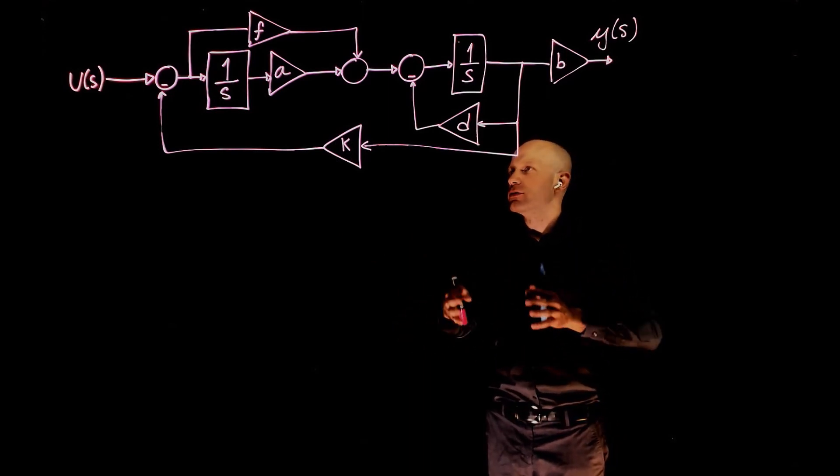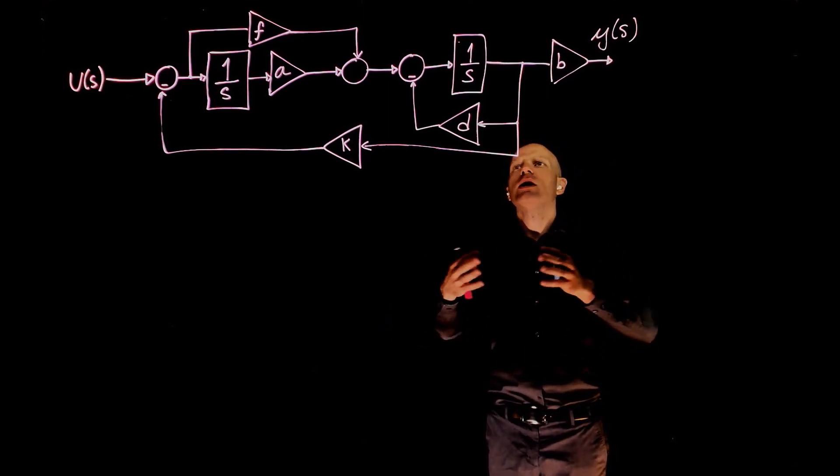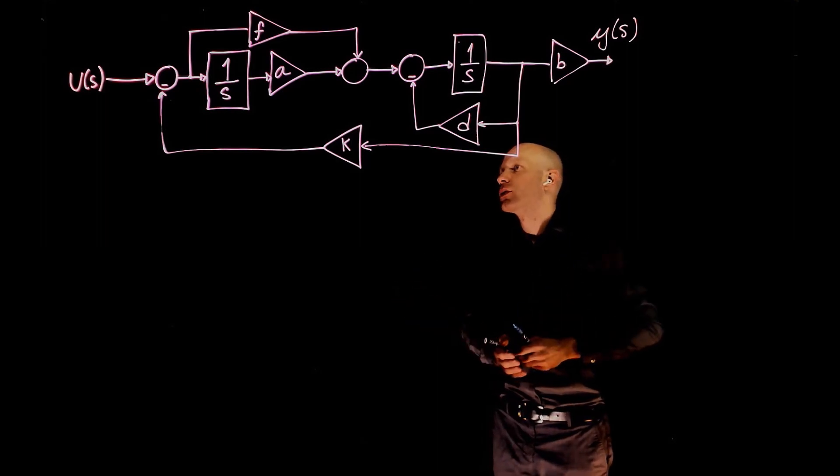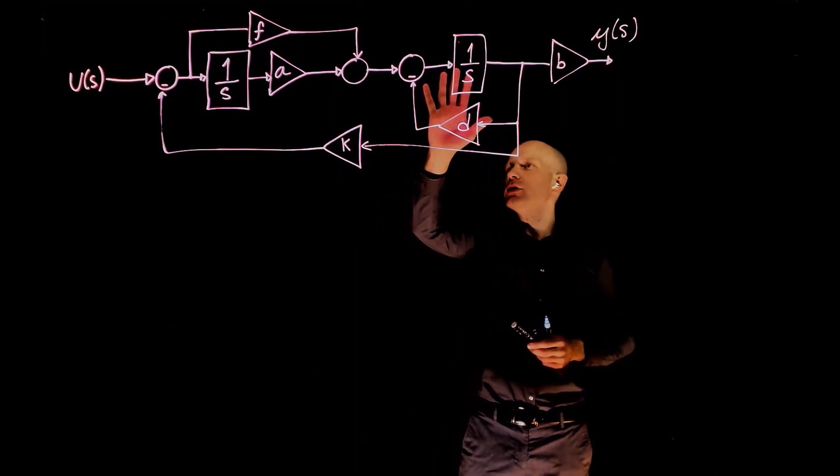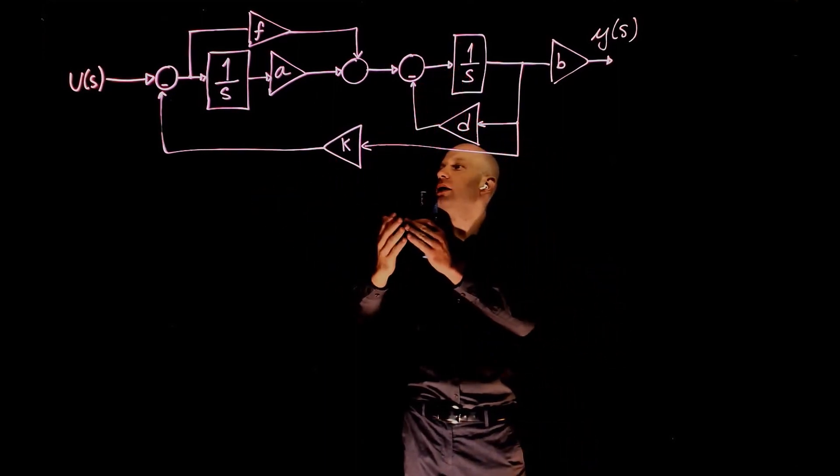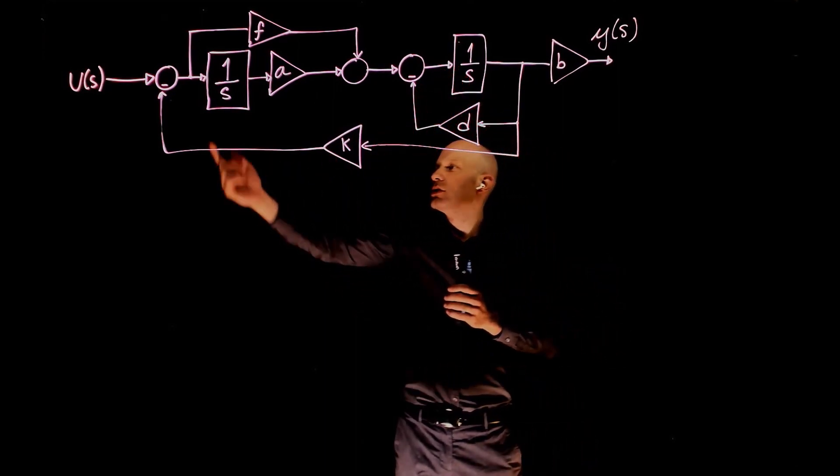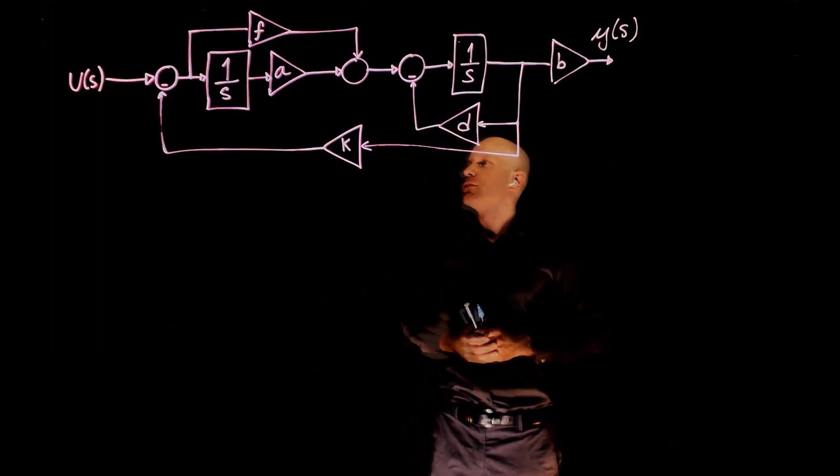This block diagram is very simple to simplify. We basically have here three operations. We can start with this feedforward loop, this feedback loop, we can combine them, and then use this feedback loop to find the transfer function.